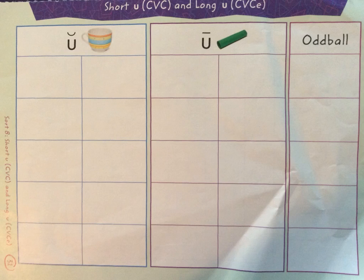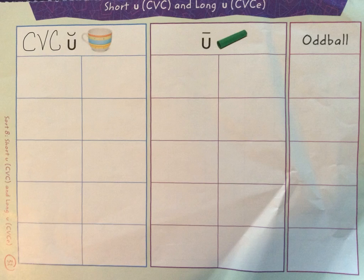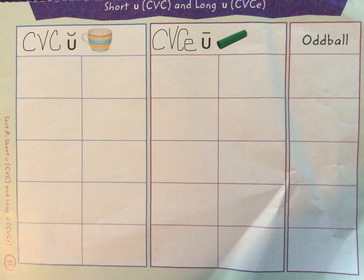We're going to start first with our short U. Our short U words make the 'uh' sound, and they are words that have a consonant plus a vowel plus a consonant. When we talk about our long U words, where the U says 'u,' we're going to have words that have a consonant, vowel, consonant, followed by an E. And remember, our oddball words are going to have a consonant, vowel, consonant, or consonant, vowel, consonant, E pattern — but instead of making the 'uh' or the 'u' sound, they make a different vowel sound.